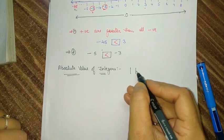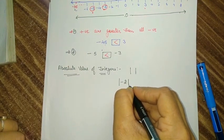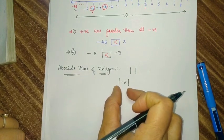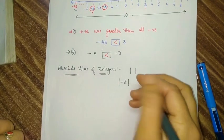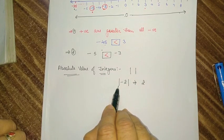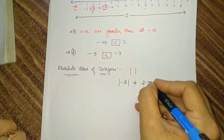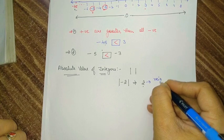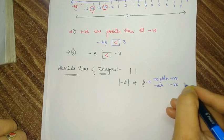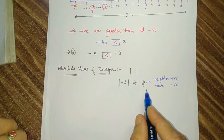For example, I have to find out the absolute value of minus 2. I draw two vertical bars around the number, and when I solve it, I get the value 2. Why? Because absolute value means write the number without sign. So here the number 2 is neither positive nor negative — it is a neutral number, there is no positive sign and no negative sign.